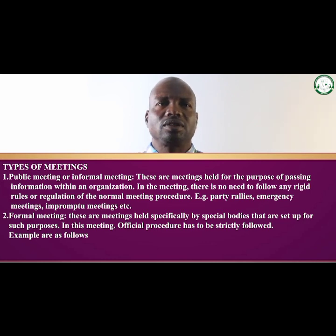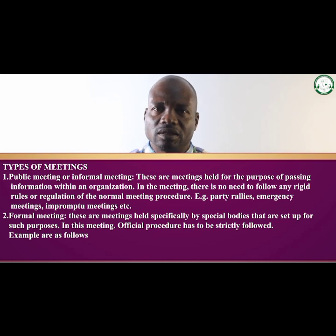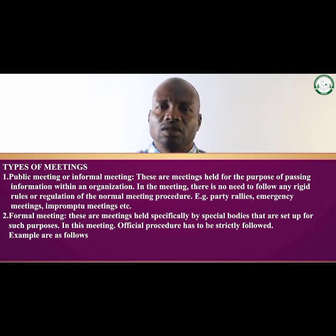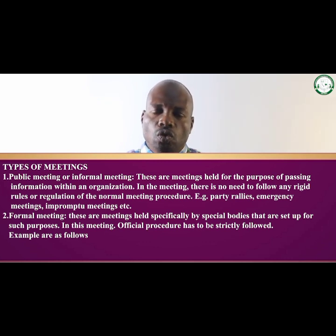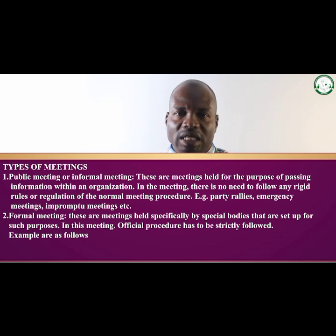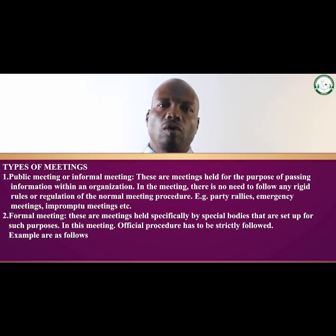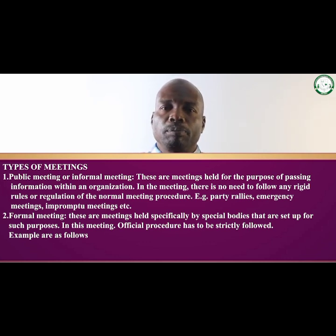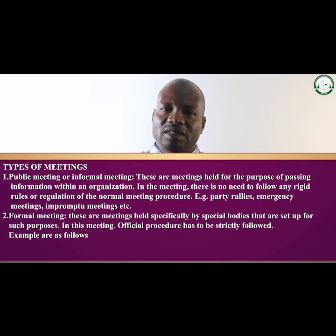Basically we have two types of meeting. The first one is called informal meeting, or you can call it public meeting. This type of meeting is held just to pass information across. It does not require a rigid format that you need to follow before you can organize or hold such a meeting. There is no requirement to give seven days, fourteen days, or a month's notice. This is informal meeting, also called public meeting. It normally comes up when there is an emergency — you can also call it an impromptu meeting. Examples include emergency meetings, rallies, and party rallies.